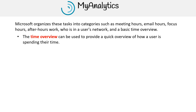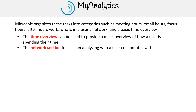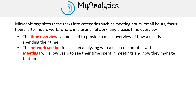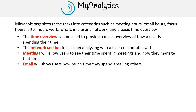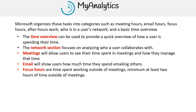The time overview can be used to provide a quick overview of how a user is spending their time. The network section focuses on analyzing who a user collaborates with. Meetings will allow users to see their time spent in meetings and how they manage that time. Email will show users how much time they spend emailing others.